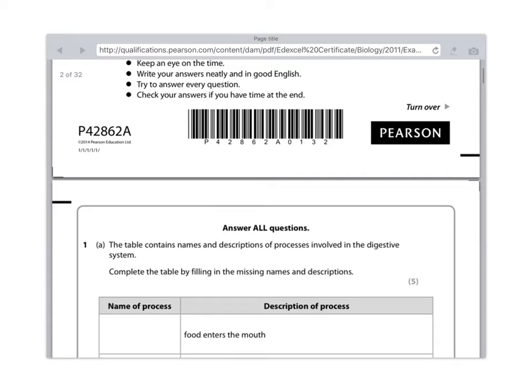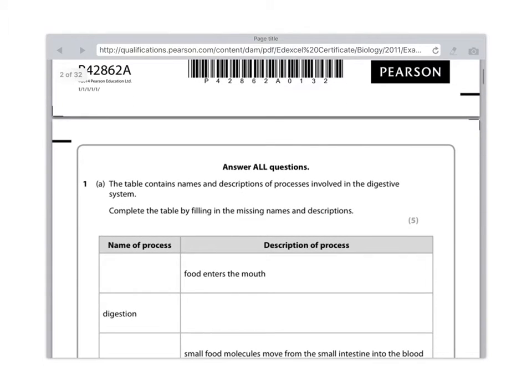So question 1A, the table contains names and descriptions of processes involved in the digestive system. Complete the table by filling in the missing names and descriptions. As I might expect with question 1, this is a factual recall type of question. It's checking to see if you've actually learned stuff. As always, try and be really technical with your answers.